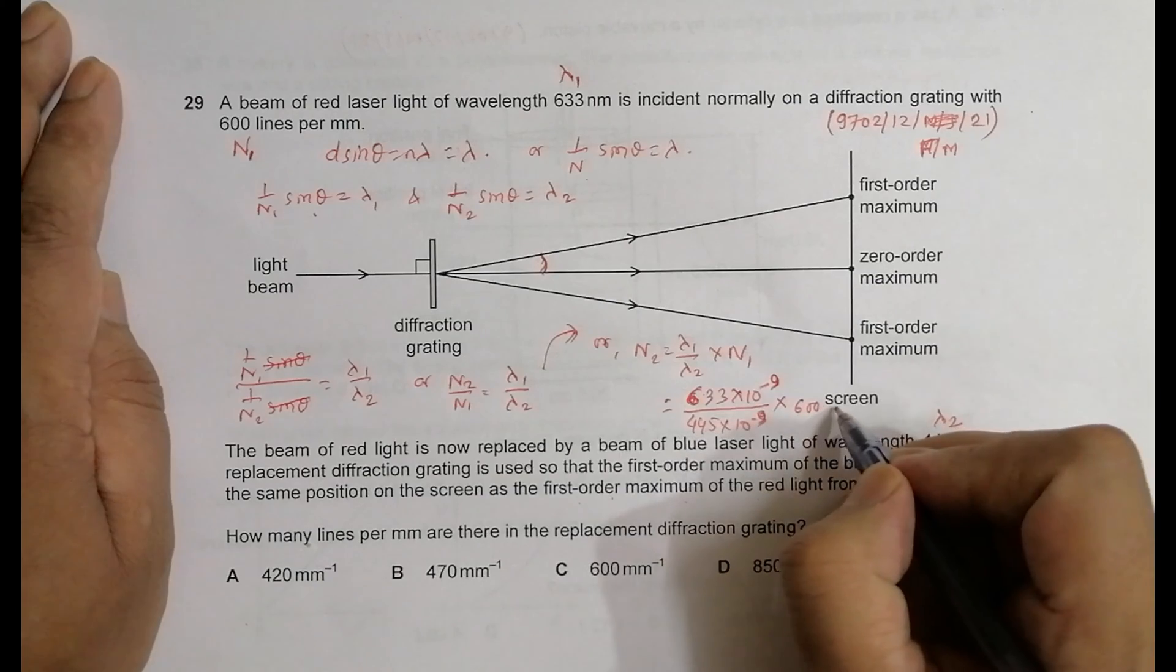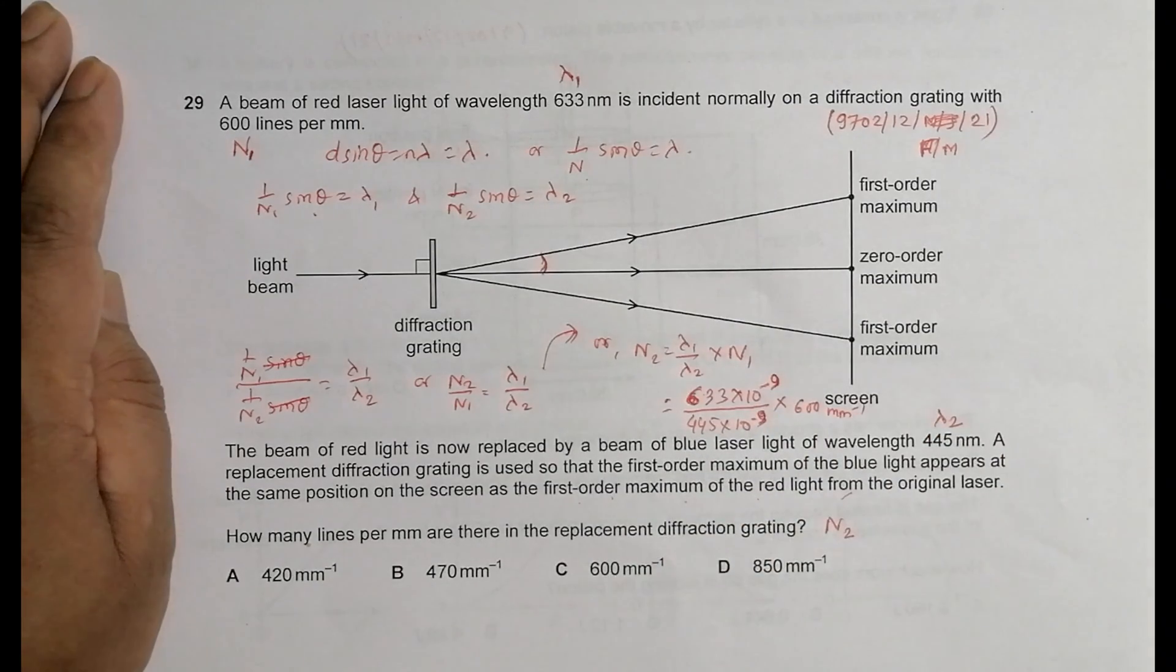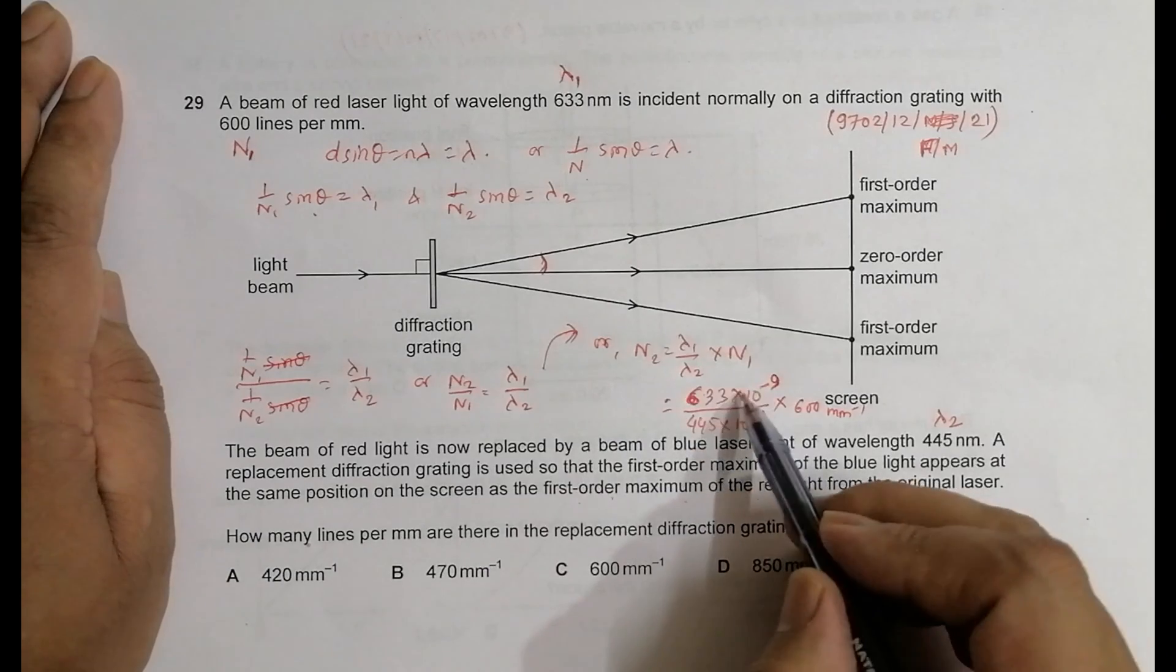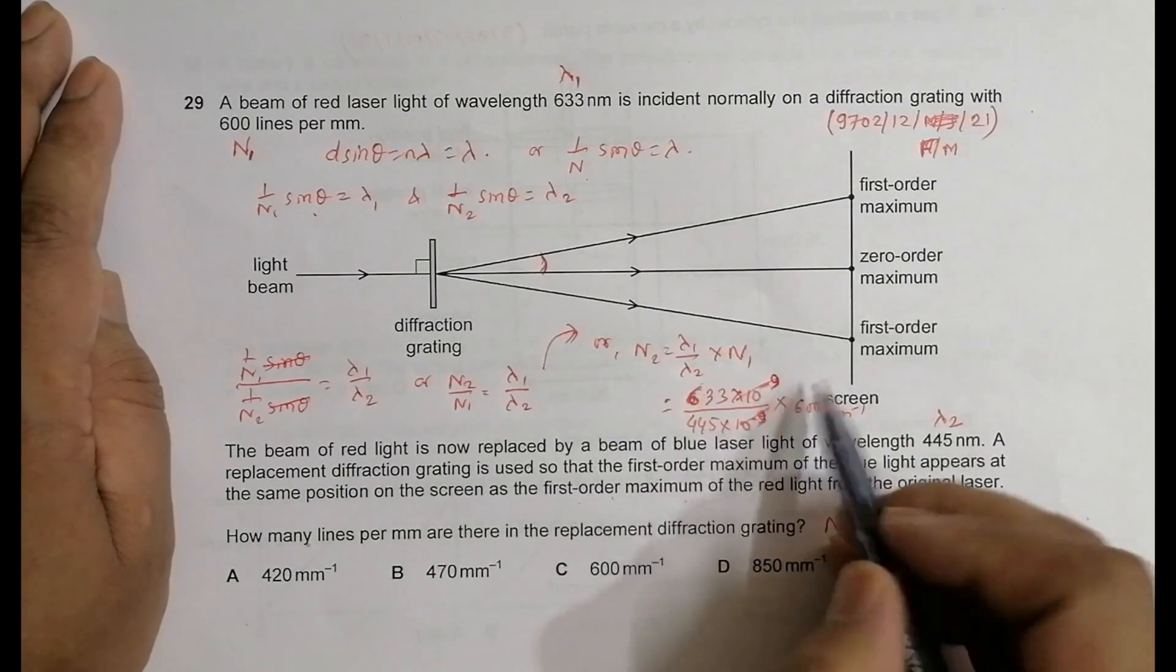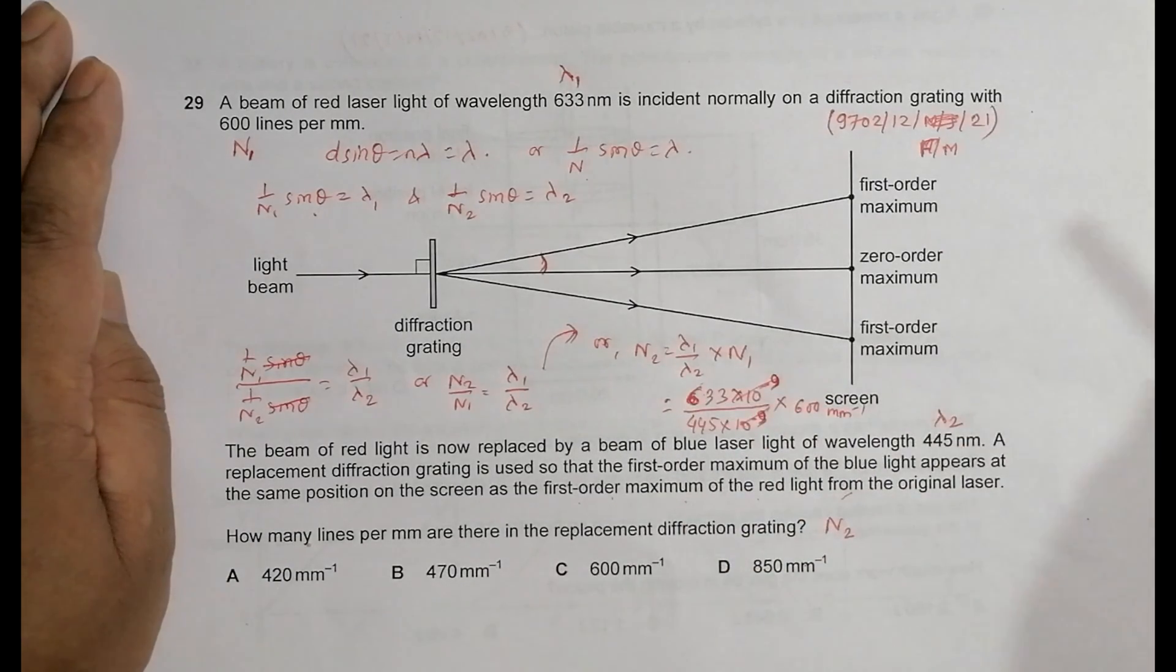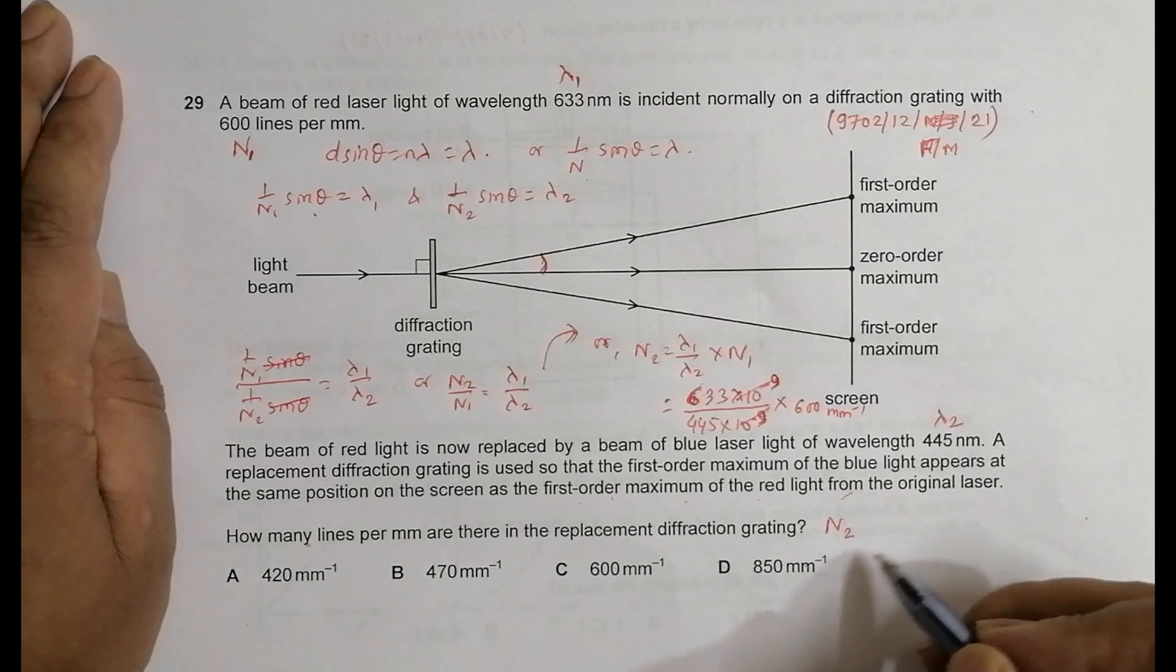When I cancel this and do the calculation in the calculator, it is 633 times 600 divided by 445, which equals 850.48 something.